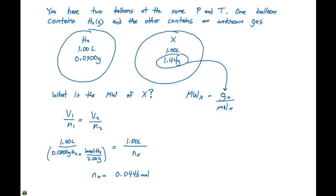We did that by doing a cross multiplication here. So we have 1.00 liter times 0.0900 grams of H2 times one mole of H2 divided by 2.02 grams. So our grams of H2 are gonna cancel out. We're left with moles here, and that's gonna equal 1.00 liters times NX. There's 1.0 liter on each side, so they're gonna cancel out. We take 0.0900 divided by 2.02, and we end up getting 0.0446 moles of our gas X.